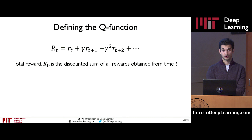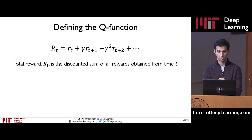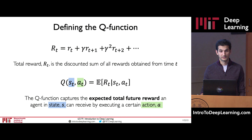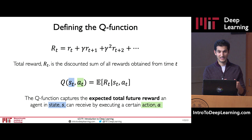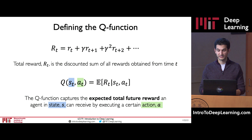There's a very important function in reinforcement learning — this is the Q function, the main focus of the first half of today's lecture. The Q function takes as input two things: the current state that the agent is in, and the current action it executes in that state. The output returns the expected total future sum of rewards that an agent can receive after that point, given the action it took in that particular state.